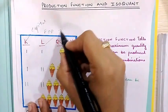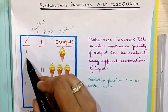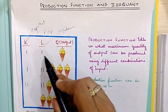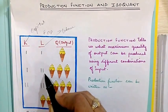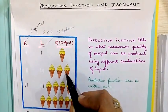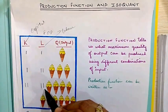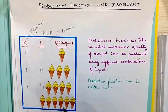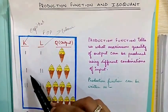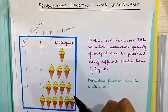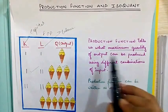The two factors of production we are using are capital and labor. When we use one unit of capital and one unit of labor each, our output is one. If we increase by one unit of labor, the output increases to three units. And if we increase both by one unit of capital and one unit of labor, the output increases to ten units. So the production function is a technical relationship between physical input and physical output of a firm.